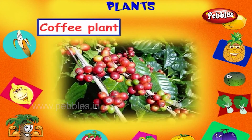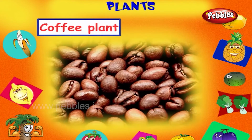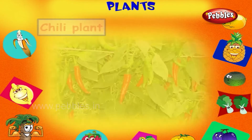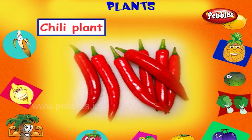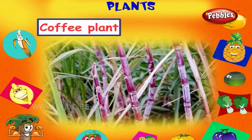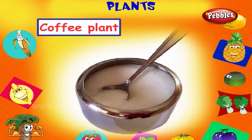This is a coffee plant, it gives us coffee seeds. This is a chili plant, it gives us chillies. This is a sugarcane plant, it gives us sweet cane which is used to make sugar.